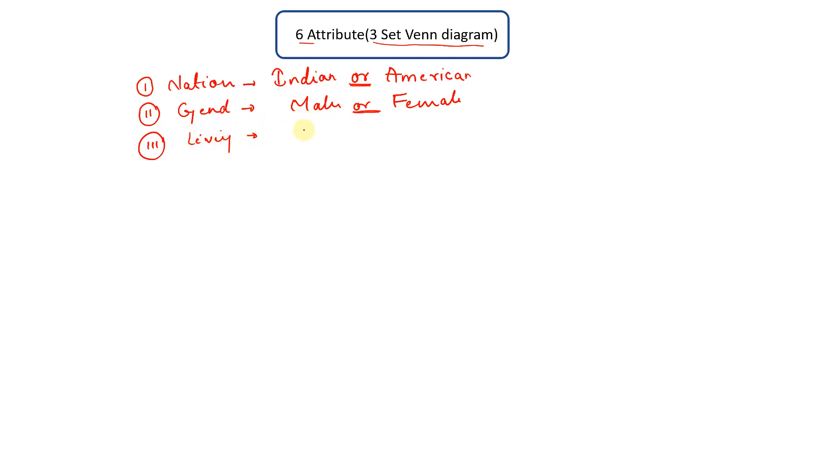Now if these three sets are there—nationality, gender, and living—then what is the possible combination that each person can have?